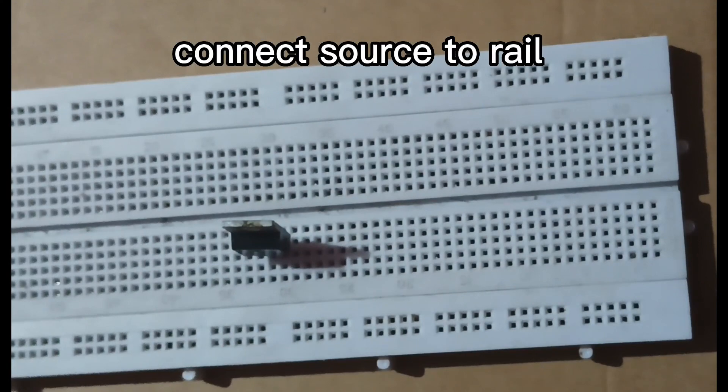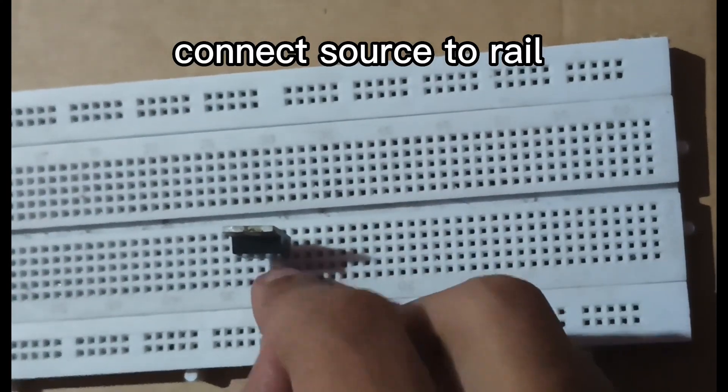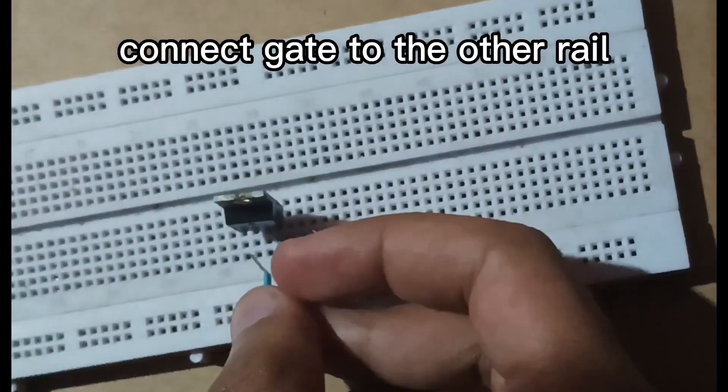Connect source to rail. Connect gate to the other rail.